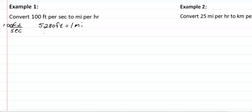And then we want to convert seconds to hours, and we have that 3,600 seconds equals one hour. These are the two conversions that we are going to be using.